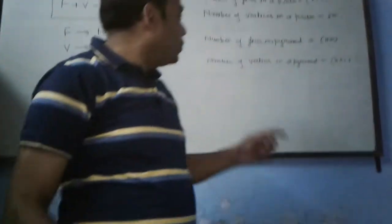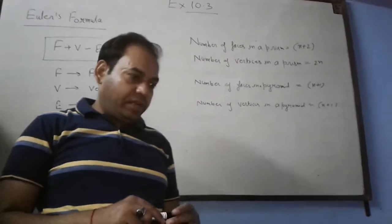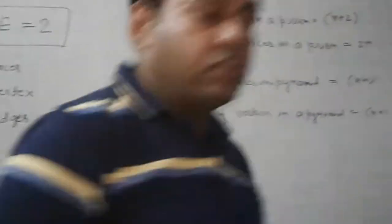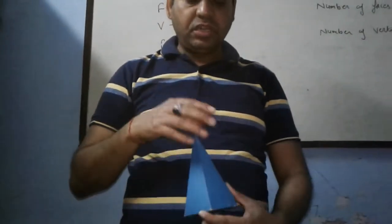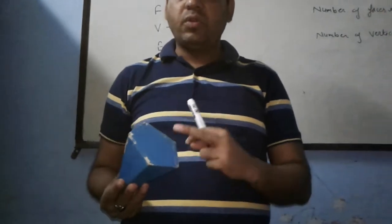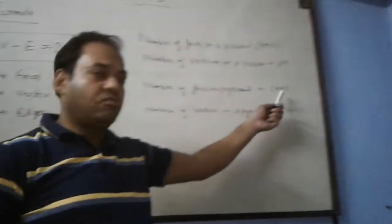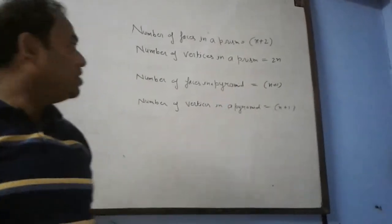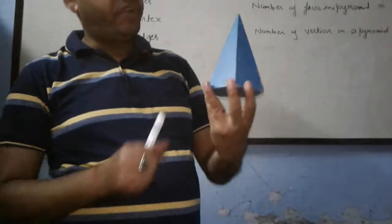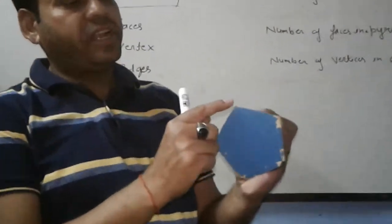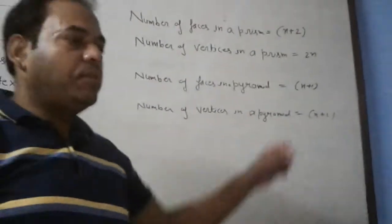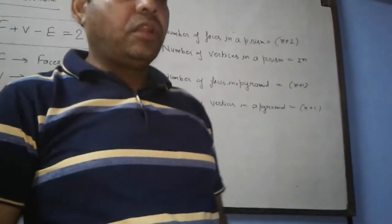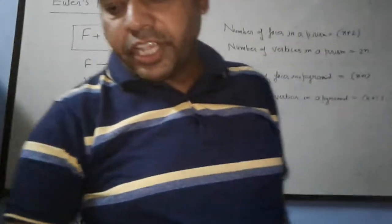Now number of faces in pyramid. This pentagon is 1 base and 5 sides of the pentagon will be 5 triangles, 5 lateral faces and 1 face, 5 plus 1 equals 6, which will be n plus 1 in general formula to find the number of faces in a pyramid. Similarly number of vertices: the pentagon will be 5 vertices, 1, 2, 3, 4, 5, and up here, so n plus 1.